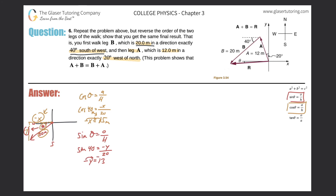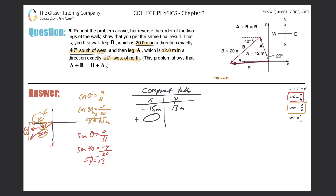Before we move on, I'm going to create my component table, with x components here and y components here. I'll plug in the components of each vector. The x component of the first vector is negative 15 meters and the y component is negative 13 meters. Then we'll find the components of the next vector and add them all together, because the sum of all components gives the components of the resultant vector. This is essentially asking us for the resultant, repeating number five.